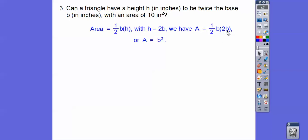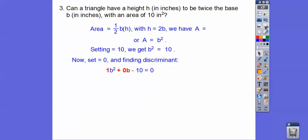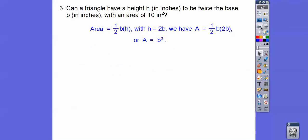So b times b is b squared. So we have area equals b squared. So we're going to set that equal to 10. Can that equal 10 right there? Setting it equal to 10, we get that. And then so can b squared equal 10? Well, using your discriminant right there.